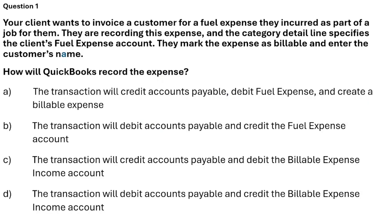If your client wants to invoice a customer for a fuel expense they incur on behalf of the job, they are recording these expenses. The category detail line specifies the client's fuel expense account. They mark the expense as billable and enter the customer name. How will QuickBooks record the expense?